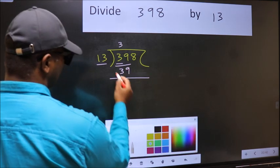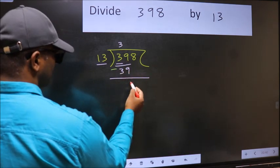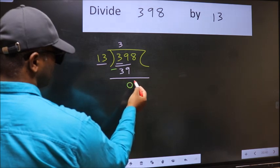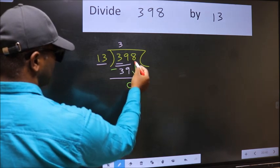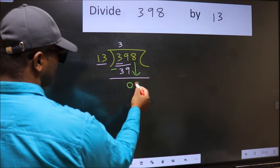Now we should subtract. 39 minus 39, 0. After this, you bring down the beside number. So 8 down.